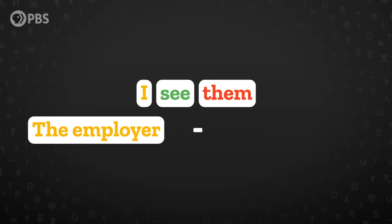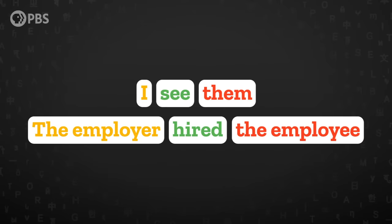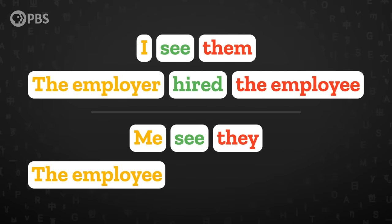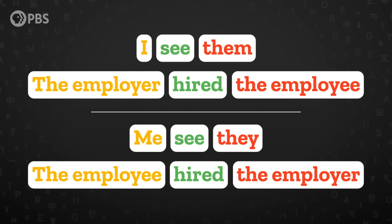English used to do the morphological strategy too, and you can still see some traces of it. For example, in 'I see them' or 'the employer hired the employee,' the word order and shapes of the words are reinforcing each other. So they may feel natural to you as an English speaker. As linguists say, they feel grammatical. Meanwhile, in 'me see they' or 'the employee hired the employer,' the word order and the shapes of the words are in tension — they're signaling opposite things. So these sentences may feel weird to you. They feel ungrammatical.